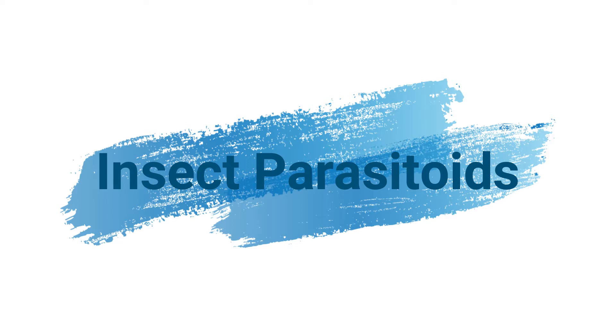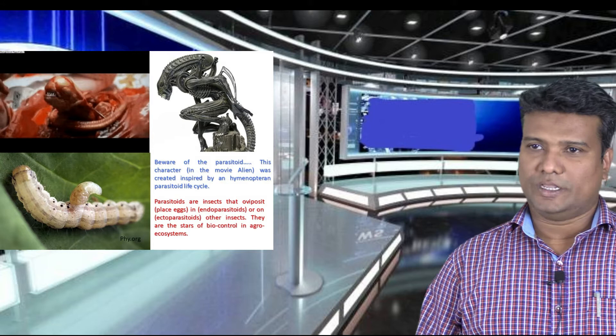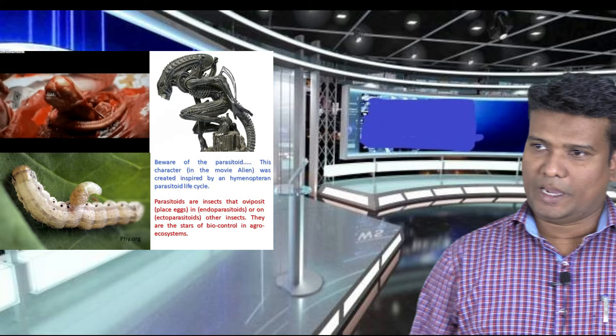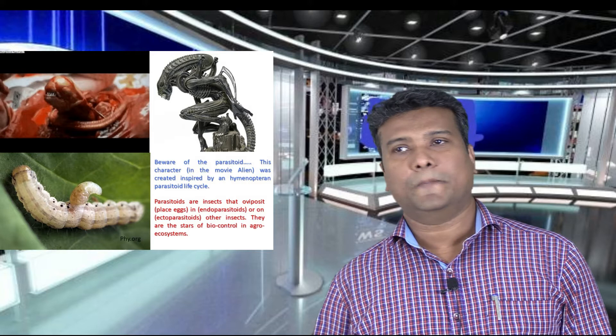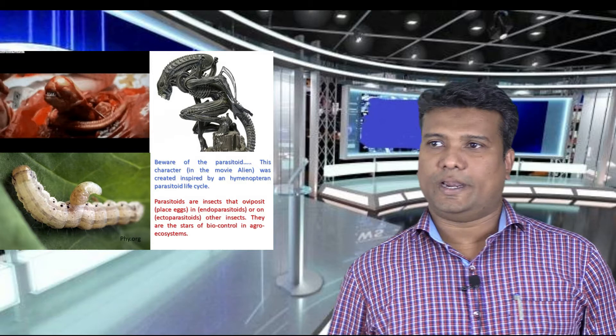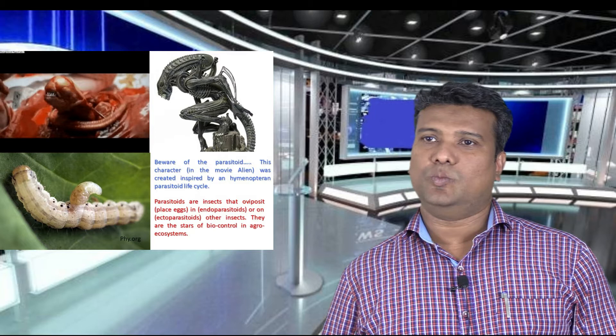Today we are going to see an interesting topic called insect parasitoids. Insect parasitoids are hymenopteran parasitoids which parasitize other insects, especially pests of agricultural importance. This parasitoid life cycle, especially the hymenopteran parasitoid life cycle, is fascinating and is an inspiration for many movie characters — especially the alien creature which breeds in the human body and comes out.